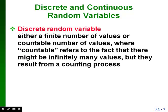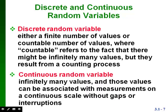Back in Chapter 1, we talked about the difference between discrete data and continuous data. We have the same type of thing with random variables. A discrete random variable has either a finite number of possible values or a countable number of values — countable meaning there might be infinitely many, but we can count them. A continuous random variable has infinitely many values that can be associated with measurements on a continuous scale without gaps or interruptions.